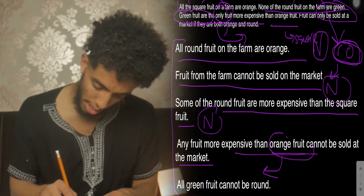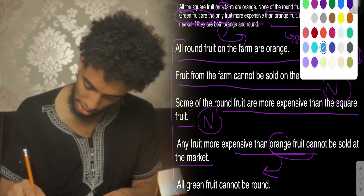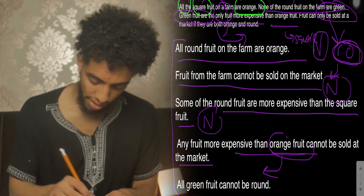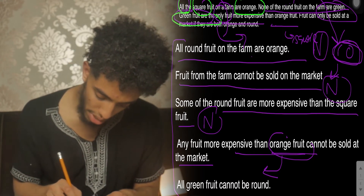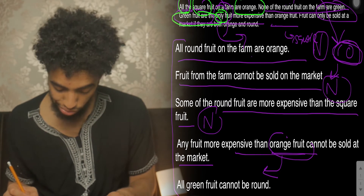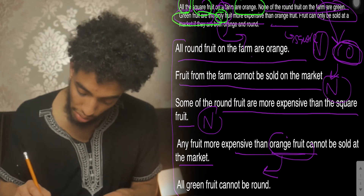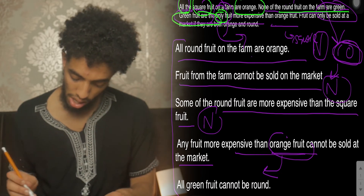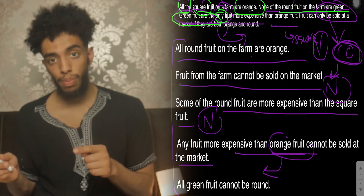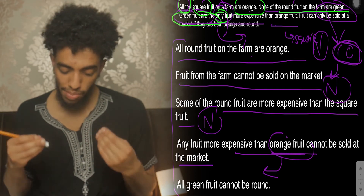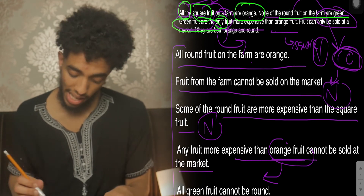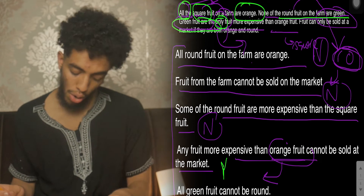To explain further: the square fruits are all orange, and the green fruits are the only fruits more expensive than the orange fruits — another clarifier. So any fruit more expensive than the orange fruit would have to be green. None of the round fruit are green, therefore any fruit more expensive than the orange fruit cannot be sold in the market. This statement is true.